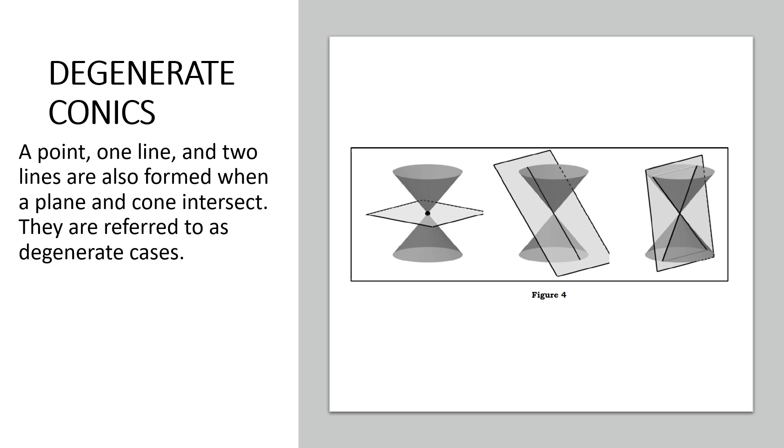Lastly, we have these degenerate conics. As you can see in the figure, we have a point, one line, and two lines. They are also formed when a plane and cone intersect. They are referred to as degenerate cases or degenerate conics.